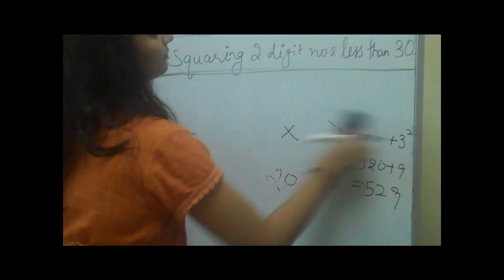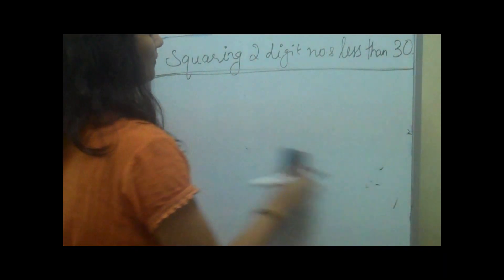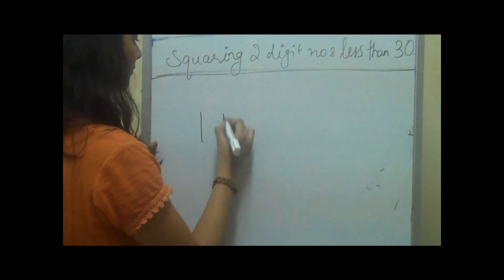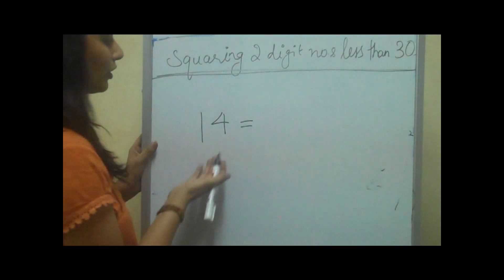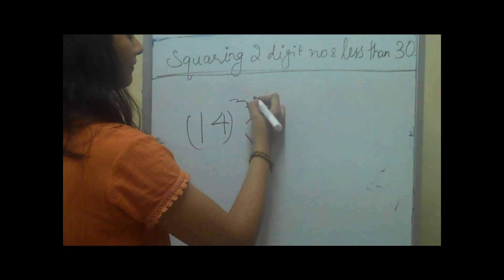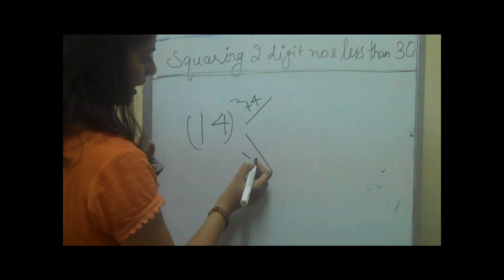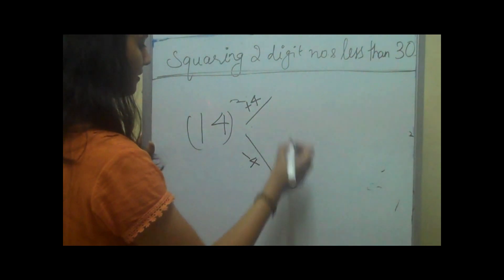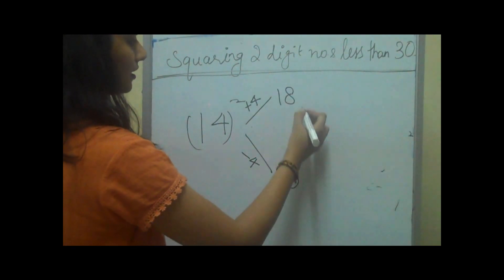Let's take another example. If we have the number 14 and we want to square it, in a similar way we'll add the unit digit and subtract the unit digit, which makes 18 and 10. We'll multiply these two numbers.